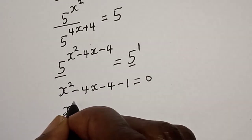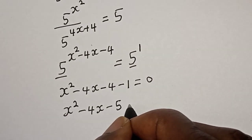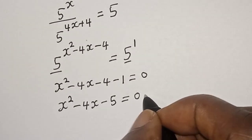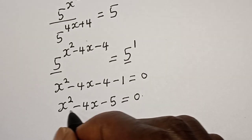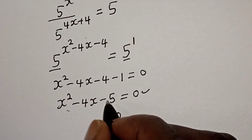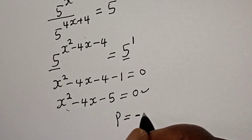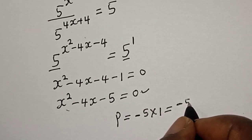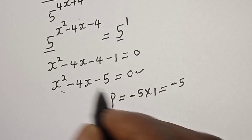Then we have s squared minus 4s minus 5 is equal to zero. Now we can solve this using factorization method or quadratic general formula, but in this case we are going to make use of factorization method because this is a quadratic equation. The product must be equal to minus 5, which is equal to minus 5 times 1. Then the sum must be equal to the coefficient of s, which is minus 4.